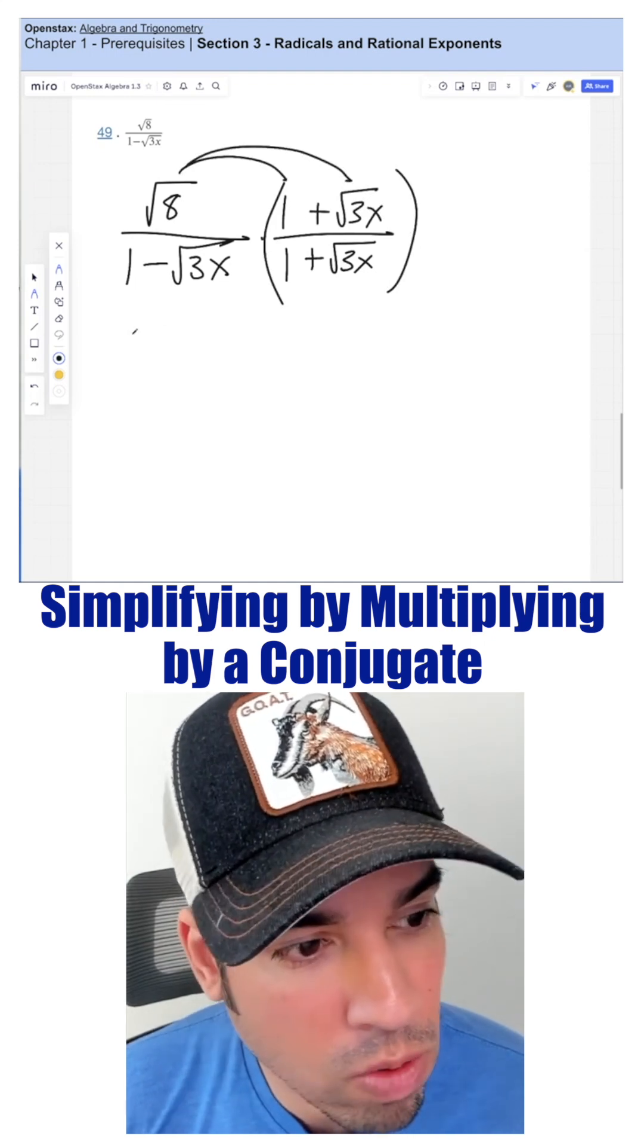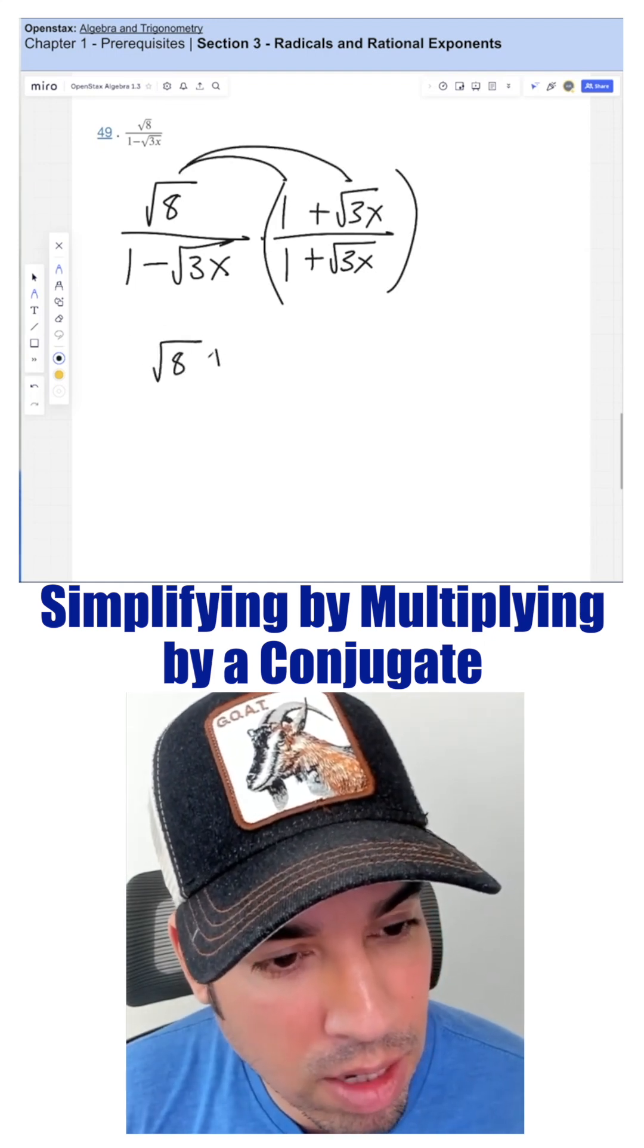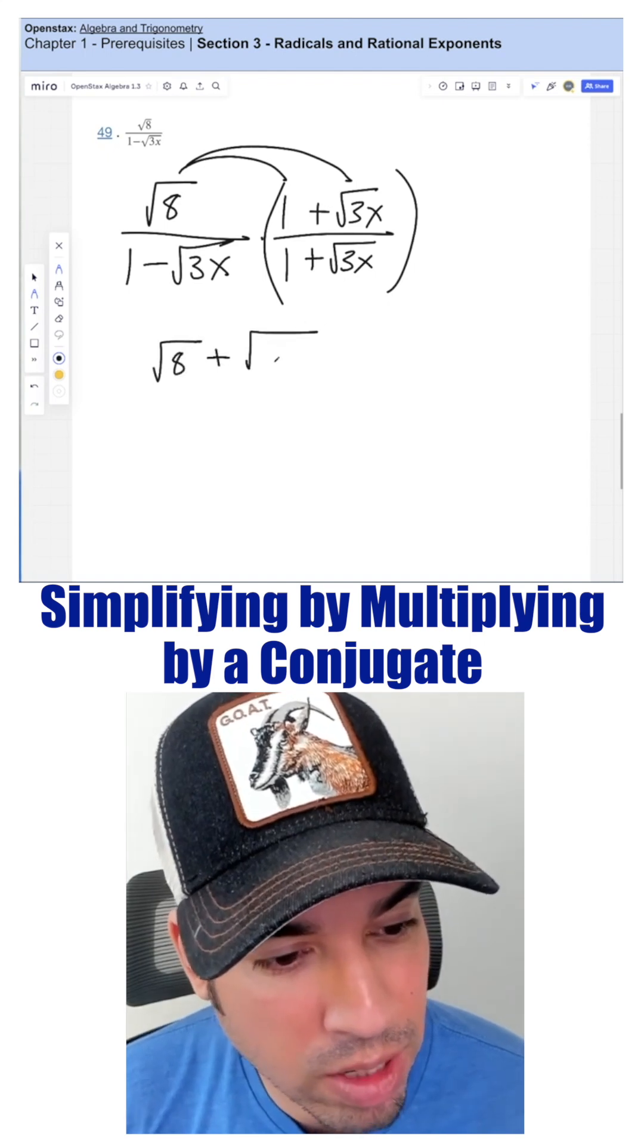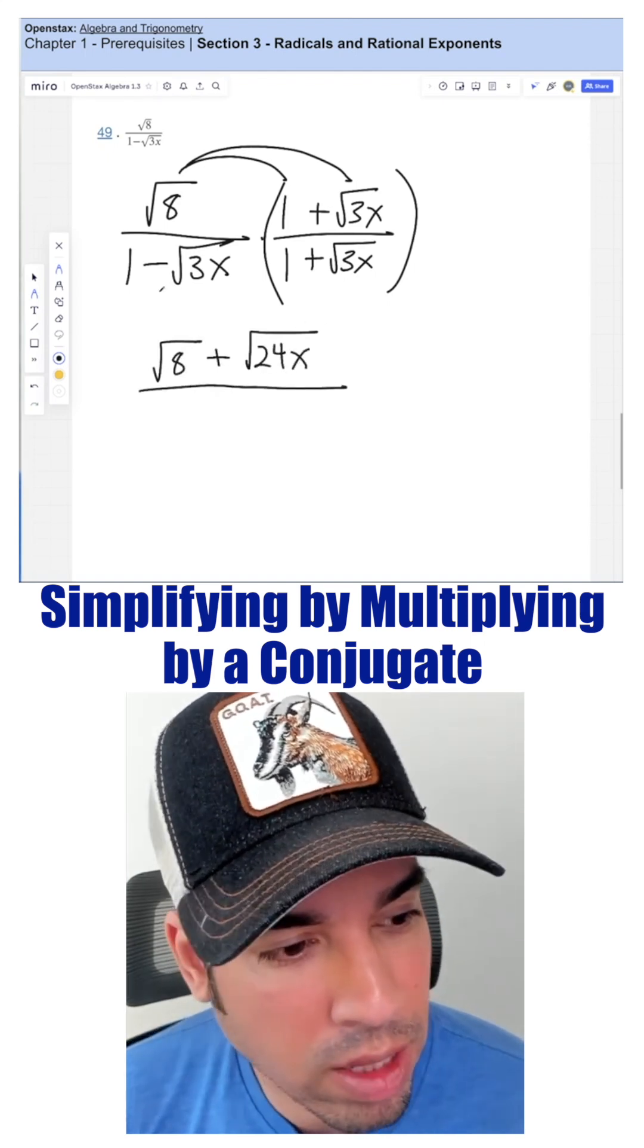First, we multiply this one over like so, rad 8 plus rad 8 times 3x, which is 24x, over, and then we got to foil.